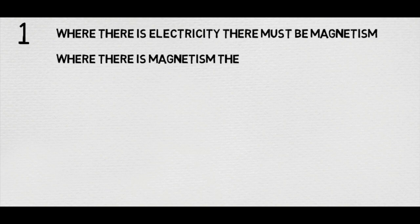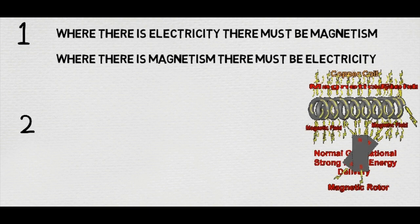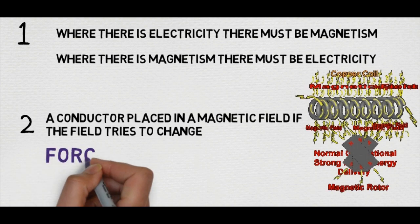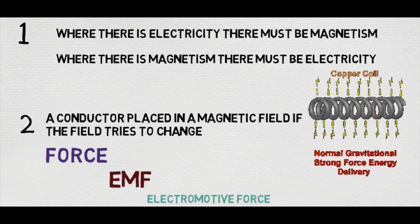Where there is electricity, there must be magnetism, and where there is magnetism, there must be electricity. One more rule to remember: if a conductor is placed in a magnetic field and the field tries to change, then a force is developed in the conductor. We call that EMF, electromotive force. This EMF tries to make current flow in the conductor.